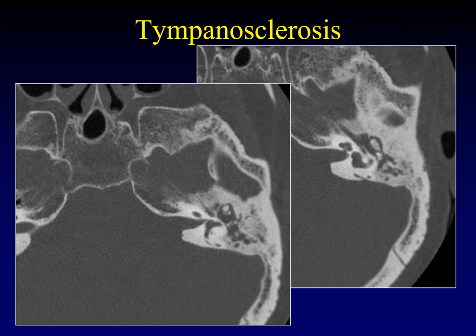Here's another example of tympanosclerosis. You can see scattered areas of calcification right at the aditus ad antrum into the mastoid antrum, and there are too many ossicles in the epitympanum — those are actually areas of dystrophic calcification, not real ossicles. Tympanosclerosis is associated with many inflammatory diseases and is classically associated with tuberculosis.